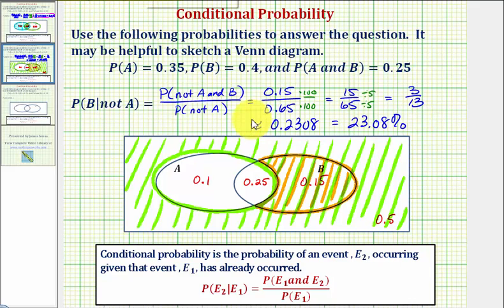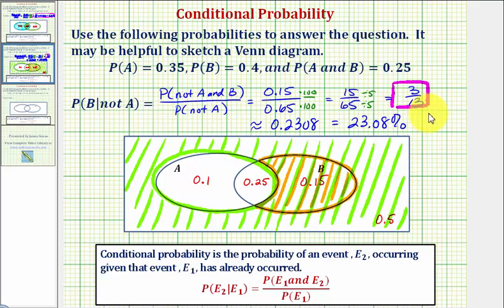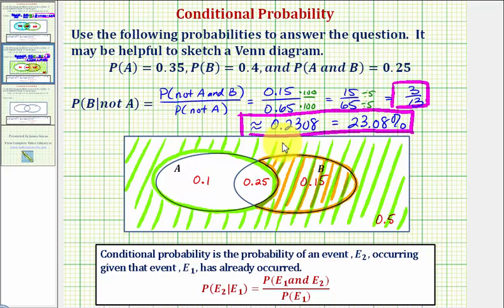Notice the only exact probability is the one in fraction form. For homework, we should enter the fractional probability, even though we often see probability as a decimal and percentage. The decimal and percentage are approximations because we rounded. I hope you found this helpful.